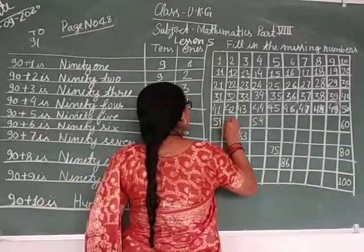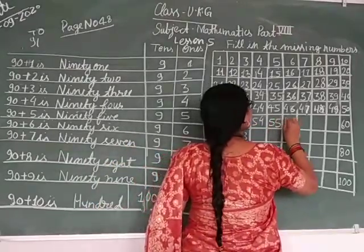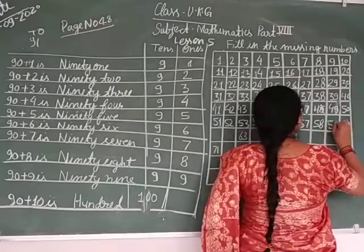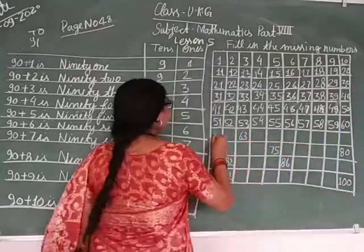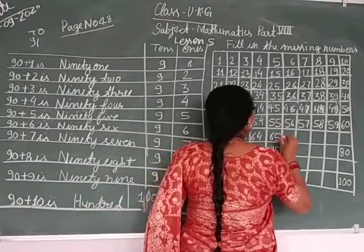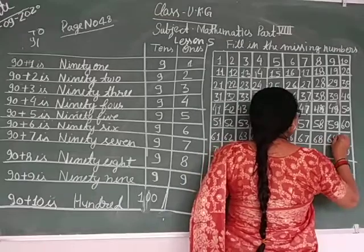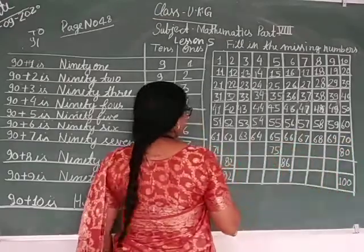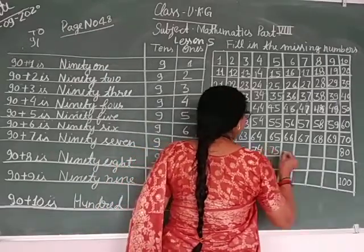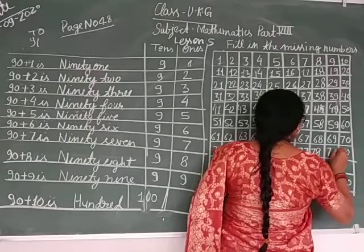Fifty-one, fifty-five, fifty-six, fifty-seven, fifty-eight, fifty-nine, sixty. Seventy-one, seventy-two, seventy-three, seventy-four, seventy-five, seventy-six, seventy-seven, seventy-eight.